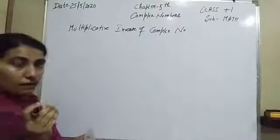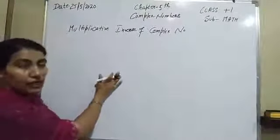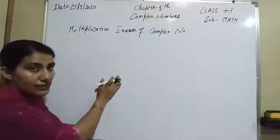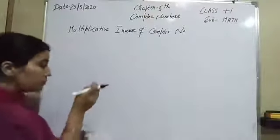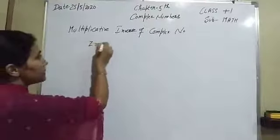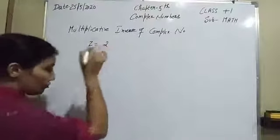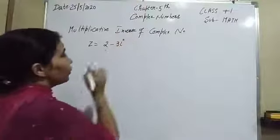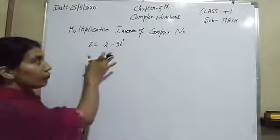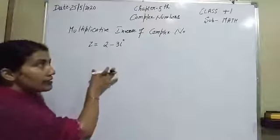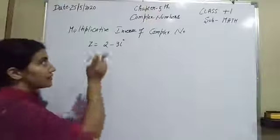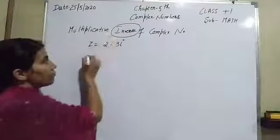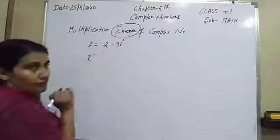Let us take some examples so that you can understand easily in which way we can find the multiplicative inverse of a complex number. Let us suppose we have a complex number z is equal to 2 minus 3 eta, and we have to find its multiplicative inverse.